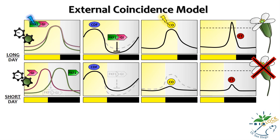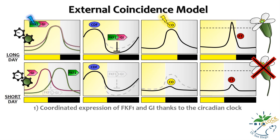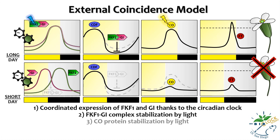In summary, three factors contribute to the high levels of FT protein production during long days: first, the coordinated expression of FKF1 and GI thanks to the circadian clock; second, FKF1-GI complex stabilization by light; and finally, CO protein stabilization by light.